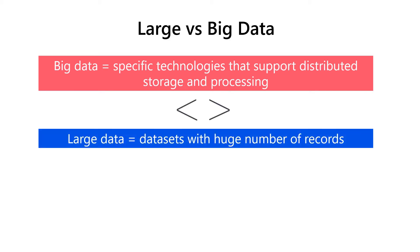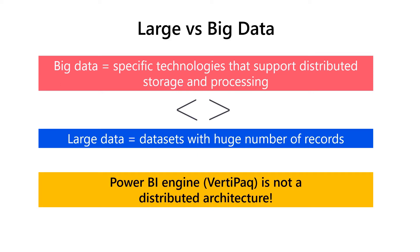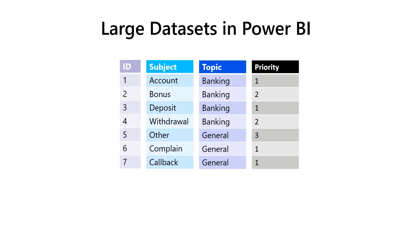Now that we know the difference between big and large data, let's examine how Power BI fits these concepts. Under the hood of Power BI and Analysis Services tabular is VertiPaq, a columnar in-memory database. As VertiPaq keeps the snapshot of the data in cache memory, all the data must reside on a single node, which means that VertiPaq is not a distributed architecture. Because VertiPaq works in a specific way, datasets also have to be modeled with certain rules in mind, so that the engine can perform in the most optimal way.